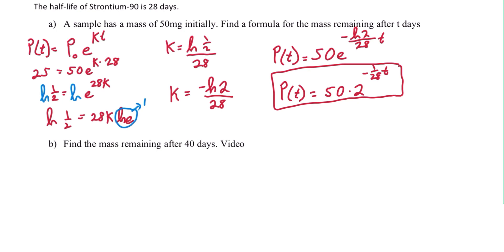Part b. Find the mass remaining after 40 days. Since we already have the formula for population, we just need to plug in 40, so evaluate the population after 40 days.